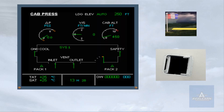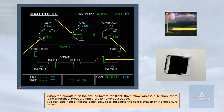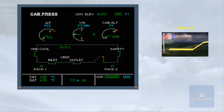When the aircraft is on the ground before the flight, the outflow valve is fully open. There is no differential pressure and there is no vertical speed. We can also notice that the cabin altitude is indicating the field elevation of the departure airfield. During the takeoff roll, the system controller signals the outflow valve to close slightly in order to pre-pressurize the aircraft. This is to avoid a pressure surge at rotation.